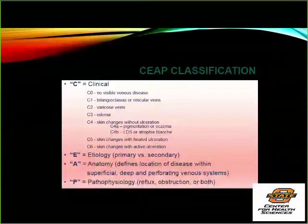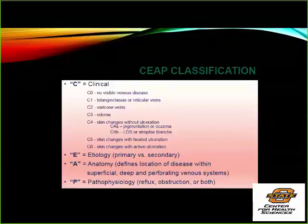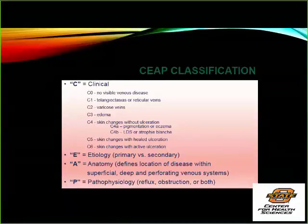Is there a classification for venous disease? Yes. Just like the New York Heart Association classification for heart failure has etiology, anatomic, physiologic, and functional components, there are classifications for venous disease: Clinical, Etiology, Anatomy, and Pathophysiology — the CEAP classification. The CEAP clinical scores go C0 through C6: C6 is active ulceration, C5 is healed ulcer, C4 is skin changes, and C3 down to C1 are edema, varicose veins, and telangiectasias. Nobody really scores zero. That's important for payer sources.